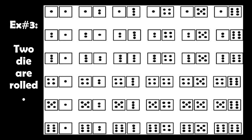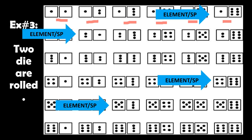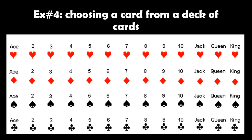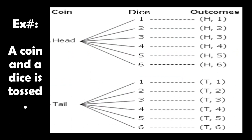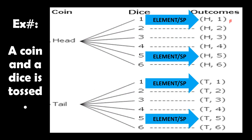Example number 3: when you roll two dice, each pair of outcomes is an element. The total of all possible outcomes is what we call the sample space. Example number 4: choosing a card from a deck of cards — every individual card, like the ace of hearts or the three of hearts, is an element. When we talk about how many there are in total, we're referring to the sample space. Example 5: coin and a dice tossed — each combination like head and 1, tail and 2, tail and 4 is an element.